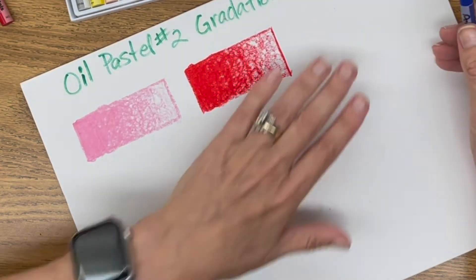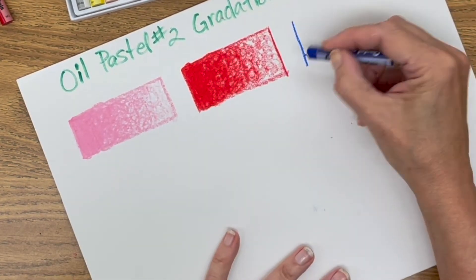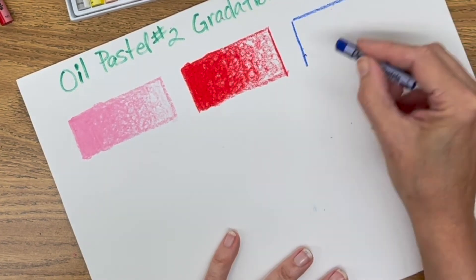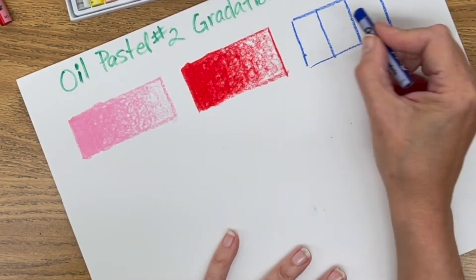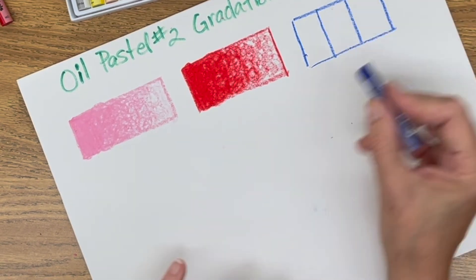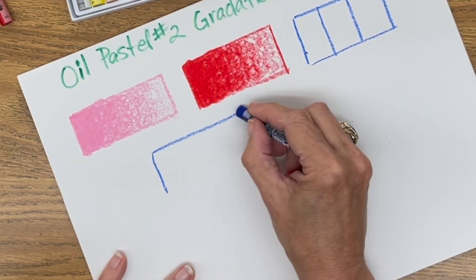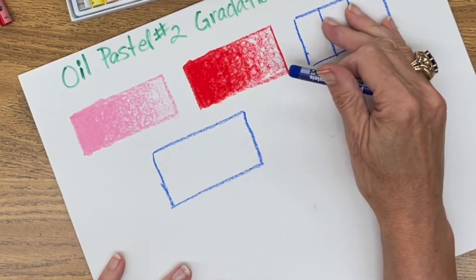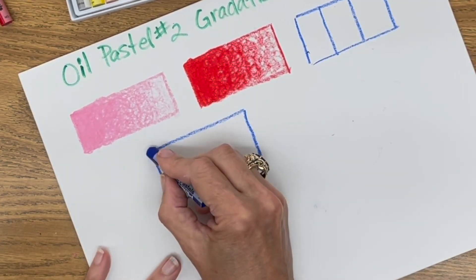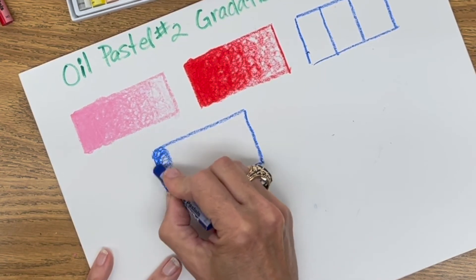And the same thing with my ultramarine blue. Oops. What am I doing? Boo boo. I'm doing a gradation. So I'm not going to X that out. I'm just going to leave it. Because when you X things out, it looks bad.